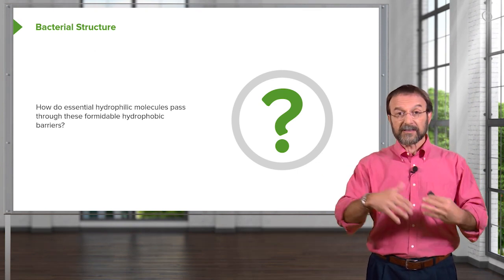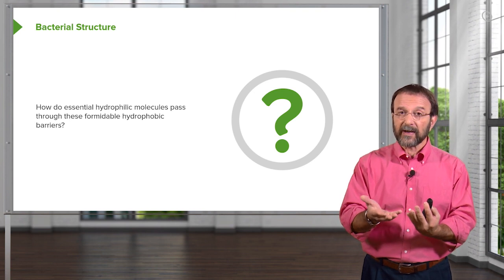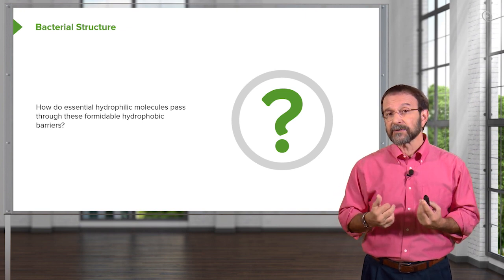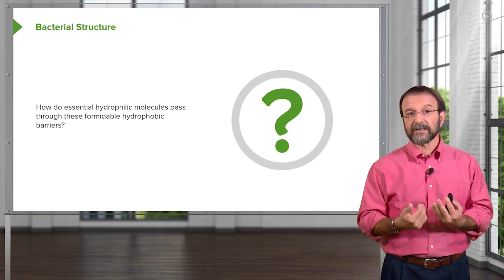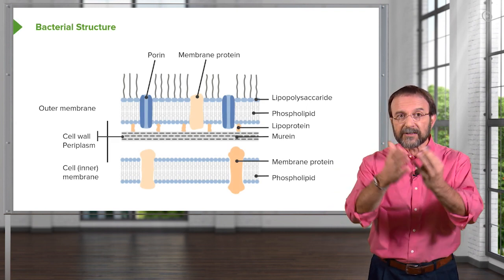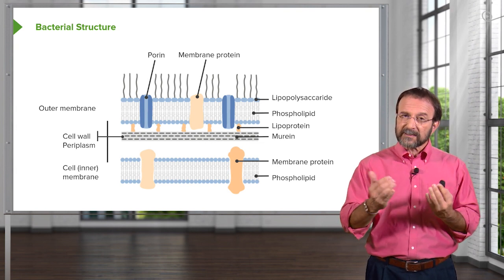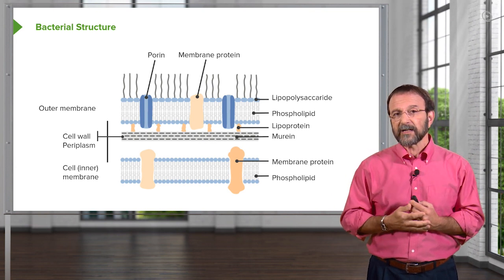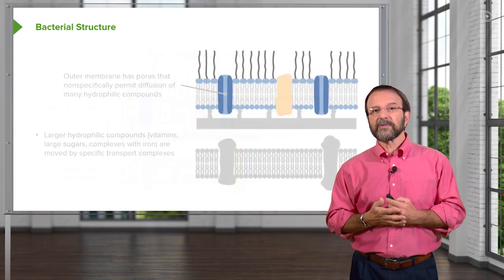Now we've looked at the gram-positive and gram-negative solutions for protecting the inner cell membrane. Let's explore how molecules get in, because bacteria need to take up molecules from the external environment. These are typically hydrophilic, so they can pass through these barriers, which exclude hydrophobic molecules — the dangerous ones. The gram-positive solution is quite simple: the thick peptidoglycan layer passes the necessary hydrophilic molecules. The gram-negative solution is a little more complicated.